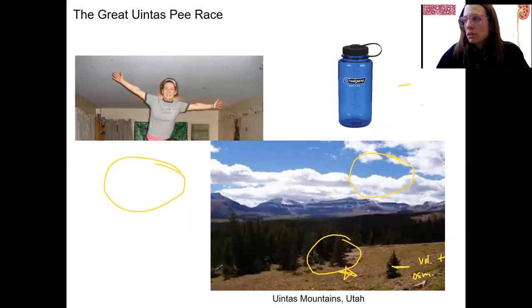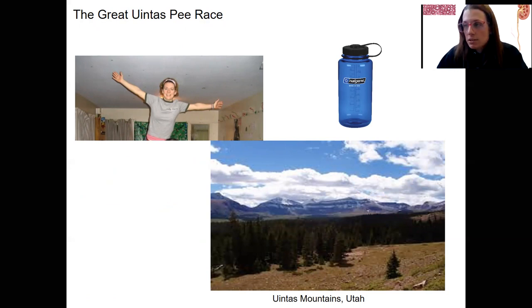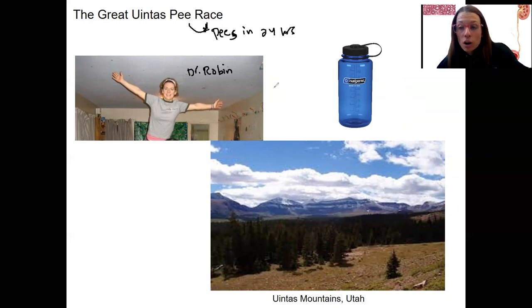Let me tell you one story. There was once a person who did a great Uintas pee race. This is a competition where you drink as much water as you can. Really, the goal is to pee as many times as you can in 24 hours. Number of pees in 24 hours. There's been other cases of this actually resulting in death. Luckily, this person, Dr. Robin, did not die. Not close, but she did drink a lot of water and peed a lot. What's going to happen? You're going to actually flush out your electrolytes. Your body cannot, you're going beyond what your body can maintain homeostatically.